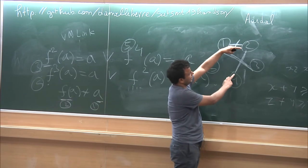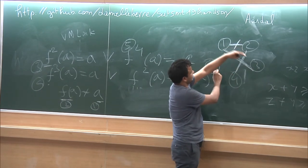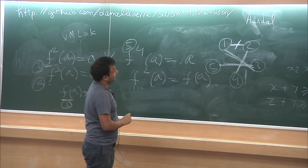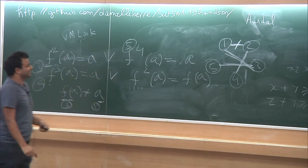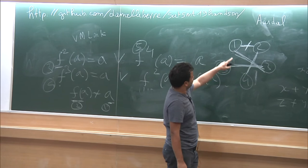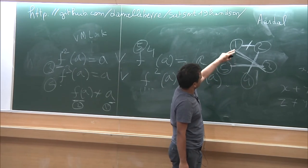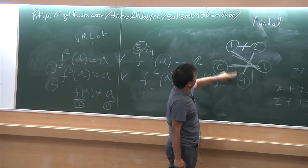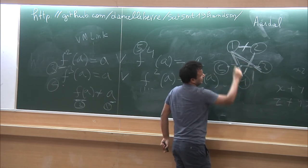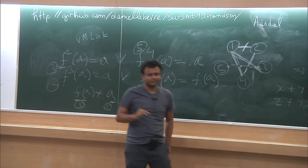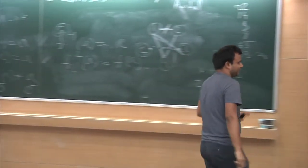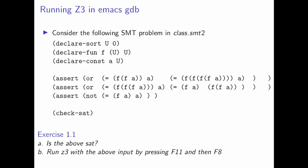Now we will see how Z3 does this reasoning in practice. We have already launched the solver. If you press F8 it will finish and give you UNSAT. But first, put a breakpoint in the file SMT underscore context dot CPP at line 3366. You find that file inside the Z3 build folder, in the source directory. If you stop there, you can probe the internal state of the solver.